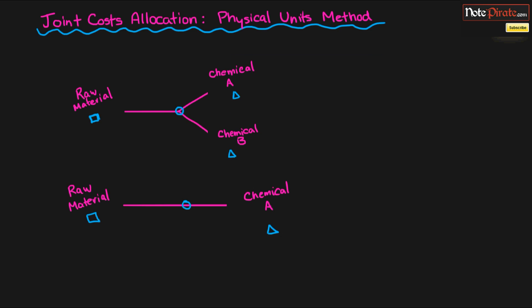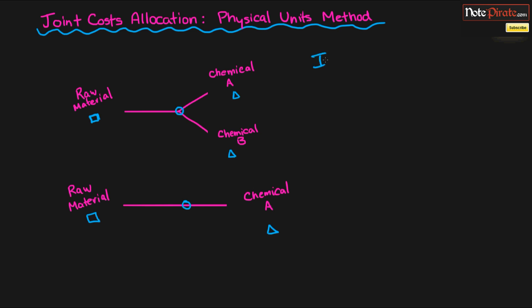The point of why we allocate these joint costs is because we're trying to determine inventory valuation. This is the first one, inventory valuation. Because if we have $100,000 that's being allocated some to chemical A and some to chemical B, we're going to have more cost that goes into these products. And when the product costs more to actually create, we're actually raising the value of our inventory or our assets. So maybe $60,000 goes into chemical A and $40,000 goes into chemical B. Well, the inventory value of chemical A is going to rise by $60,000 more and the value of chemical B will rise by $40,000 more because we've allocated that cost.